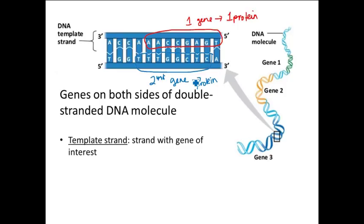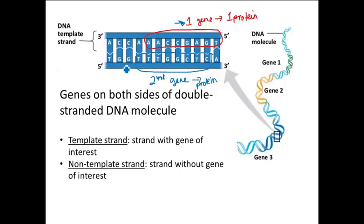Since genes can be on both sides, you need to specify which side you are reading. The side that has the gene of interest — the gene that's going to be expressed, the protein that's going to be made — we call that the template strand. The other side would be the non-template strand. You could reverse that depending on which gene you want to express. Those terms are relative and just help us orient on the DNA which side is being read. Only one side can be read at a time — and when I say read, I mean made into a protein.